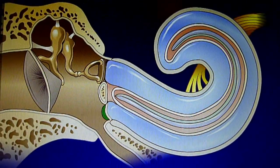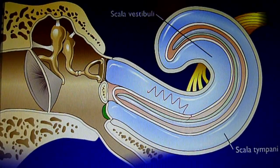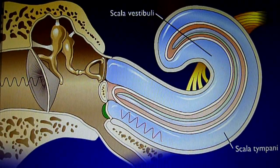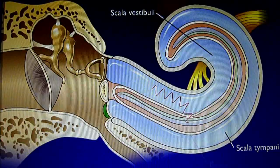Vibration of the footplate causes the perilymph in the scala vestibuli to vibrate, which in turn causes displacement of the basilar membrane.